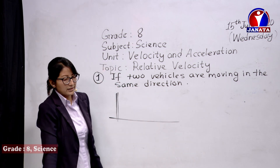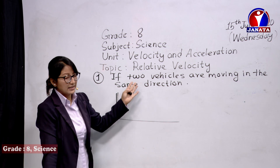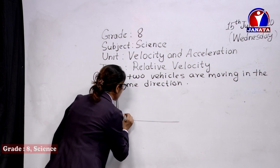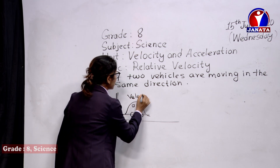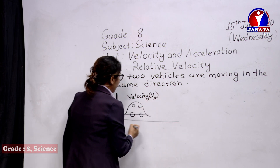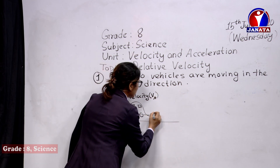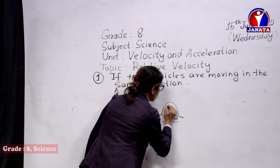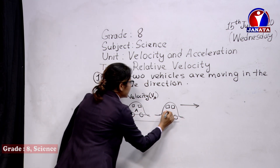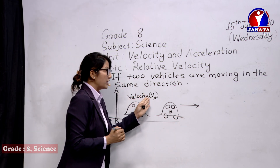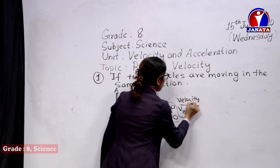Let's check the slide. Here, two vehicles are moving in the same direction. The yellow-colored vehicle is moving with velocity vA, and the second one with velocity vB. Suppose this is vehicle A moving with velocity vA, and a reference point such as a pole is here. With respect to this reference point, both vehicles are moving in the same direction. This is vehicle A and this is vehicle B. Vehicle A is moving with velocity vA, and vehicle B is moving with velocity vB.